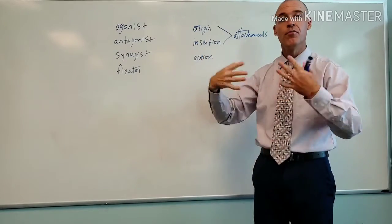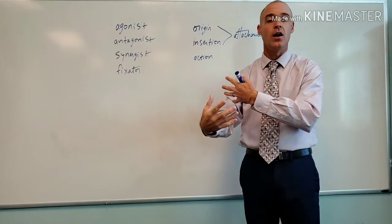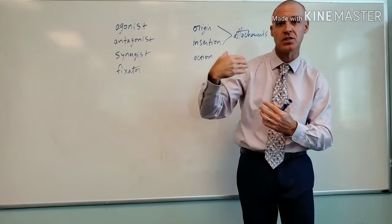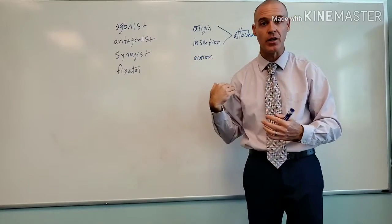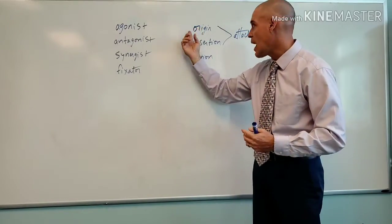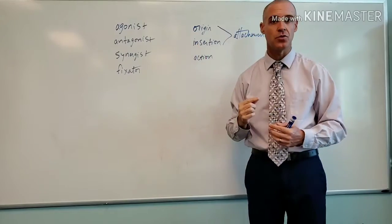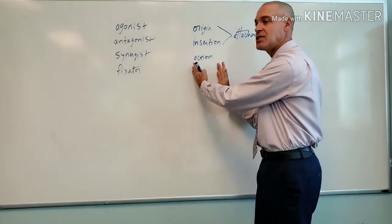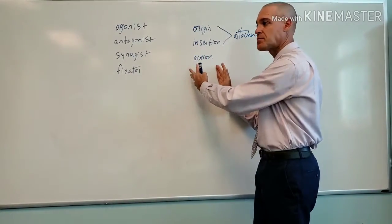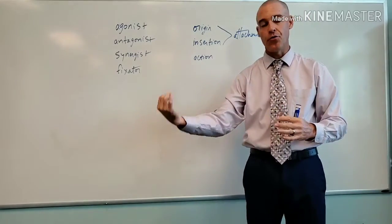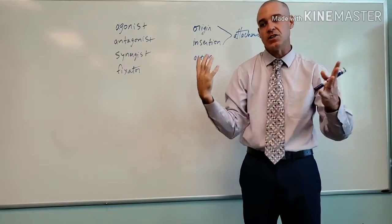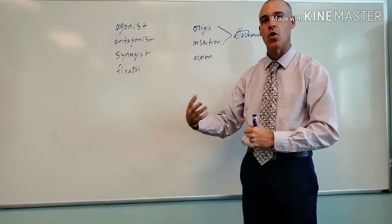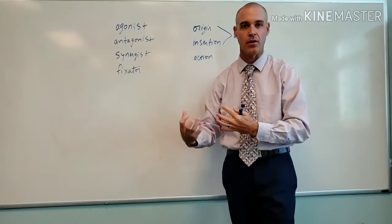The bones that move more — for example, if there's an attachment from scapula to humerus — chances are the scapula is the origin and the humerus is the insertion. So look at your action first. Go through the movement and ask yourself which bone moves more and which bone moves less.